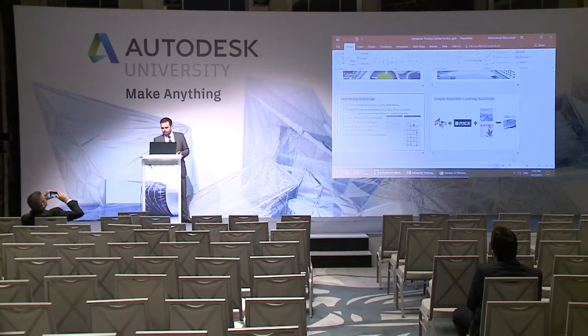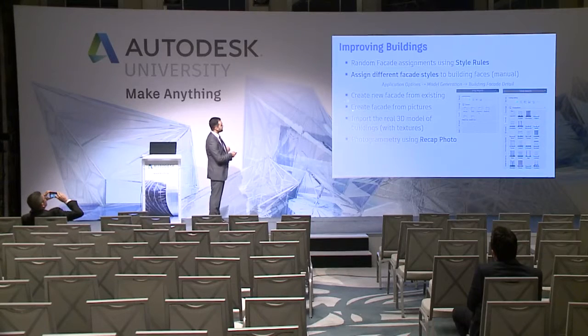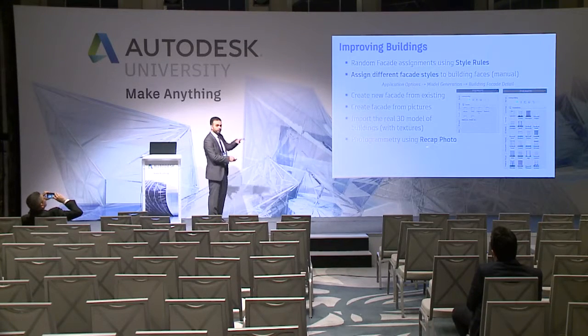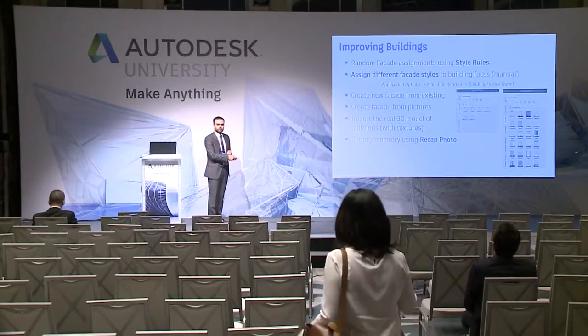There are many features inside InfraWorks to improve the quality of your model. You can create a new facade from an existing one — copy-paste a style from the template, modify some parameters, and generate a new one. You can also create a facade from pictures: take pictures of buildings in Istanbul, create similar buildings inside Civil 3D or 3DS Max, and bring them into InfraWorks. And finally, photogrammetry as we can do in Recap Photo.